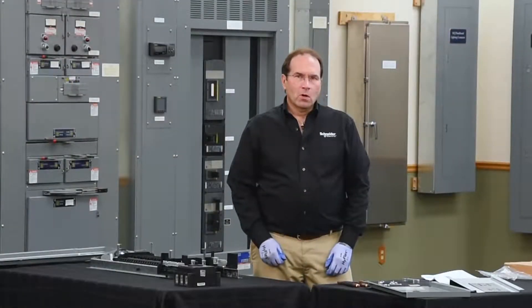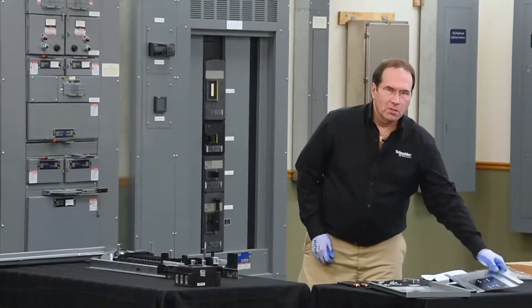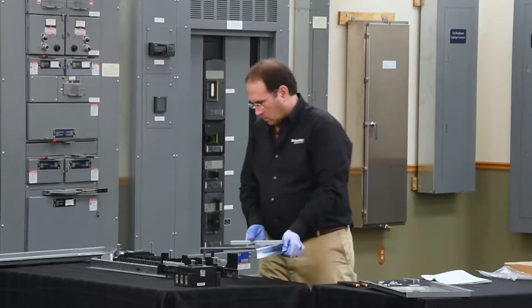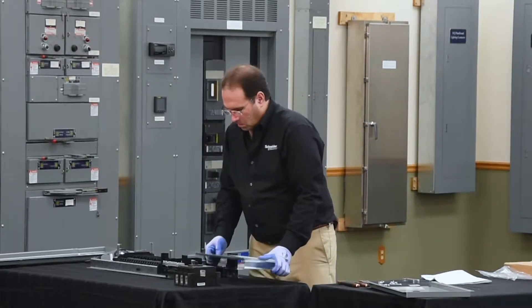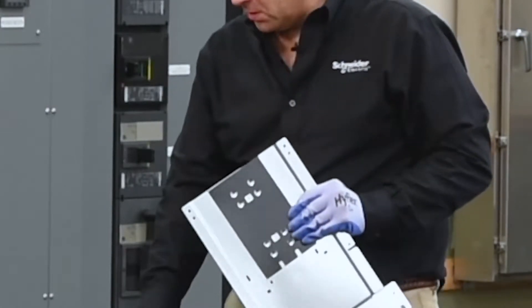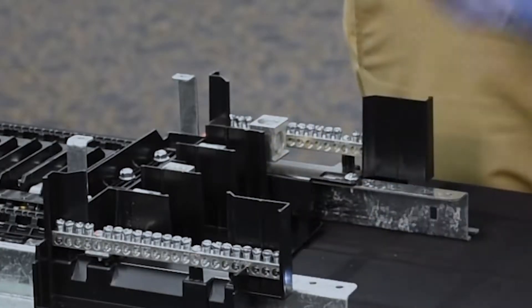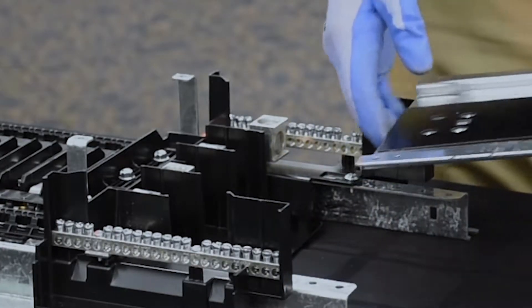The first step in the process is to install the mounting pan that is included in the kit. The mounting pan has two holes on each side and these align with two holes on each side of the rails on the main end of the panel board.